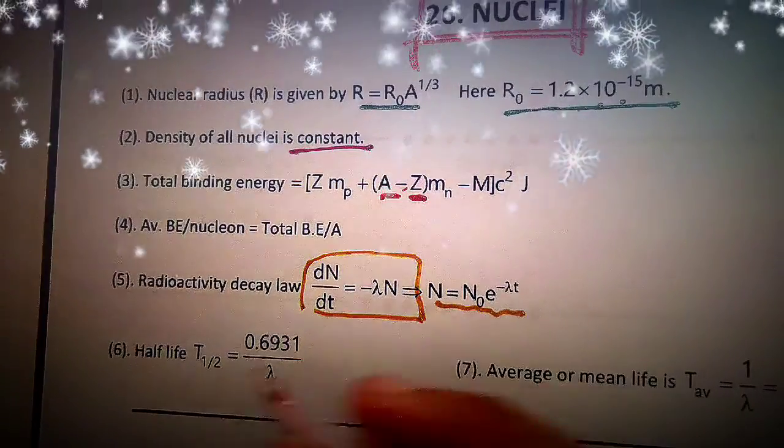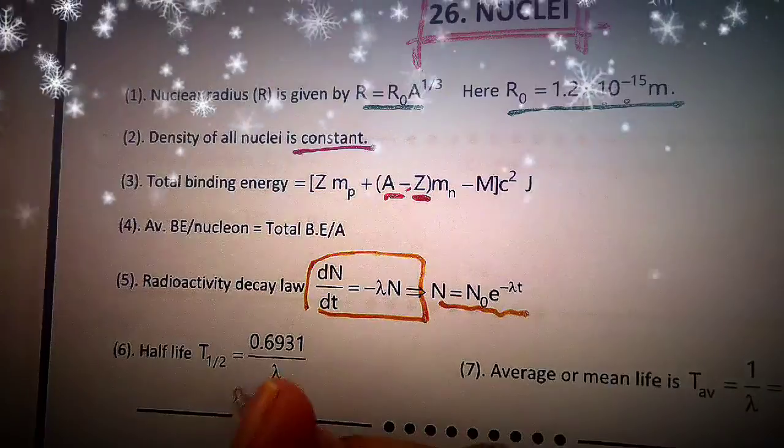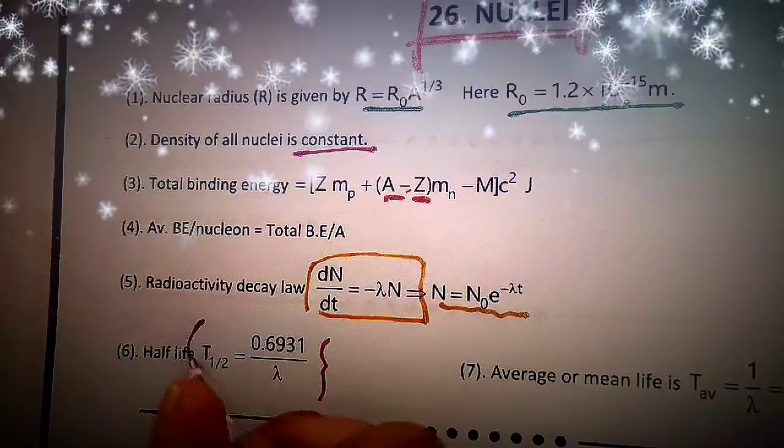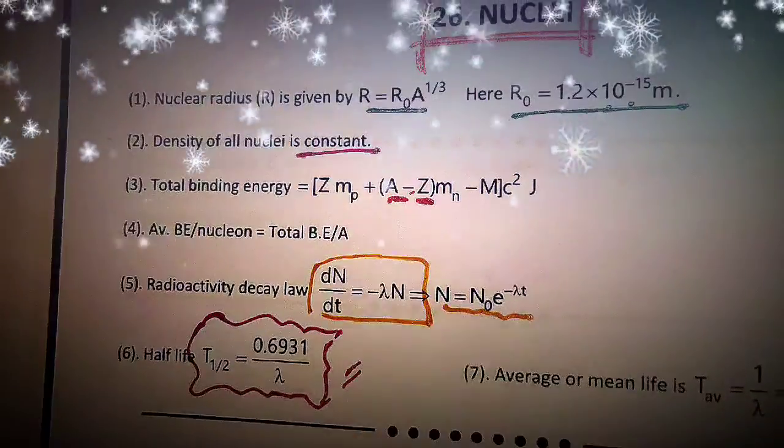Half life ka formula hai T half equal to 0.6931 by lambda. This is very important.